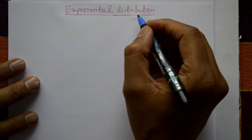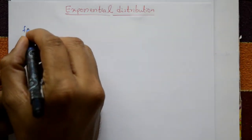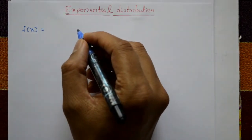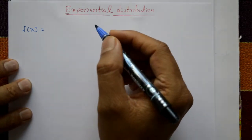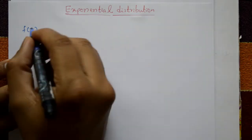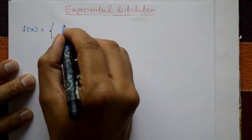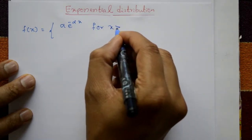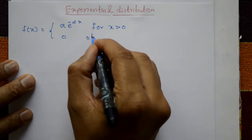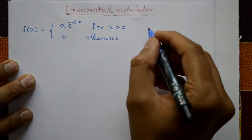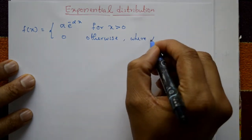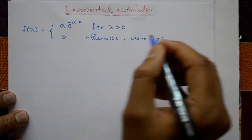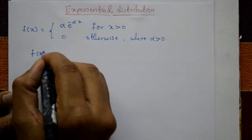The exponential distribution is a continuous probability distribution, meaning it takes non-countable infinite values. The exponential distribution is given by f(x) = α·e^(−αx) for x greater than zero, and zero otherwise, where alpha is a positive constant greater than zero.